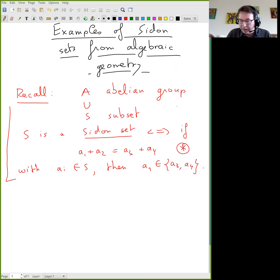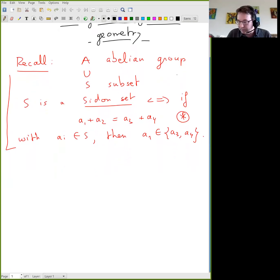I've just written here to start the definition of a Sidon set. There's been a number of talks already, and I presume this definition has been seen many times, but just so that everything is clear. We have some abelian group and some subset in that abelian group. We say it's a Sidon set when the equation a1 plus a2 equals a3 plus a4 has only the obvious solutions. So either a1 is a3 or a1 is a4.